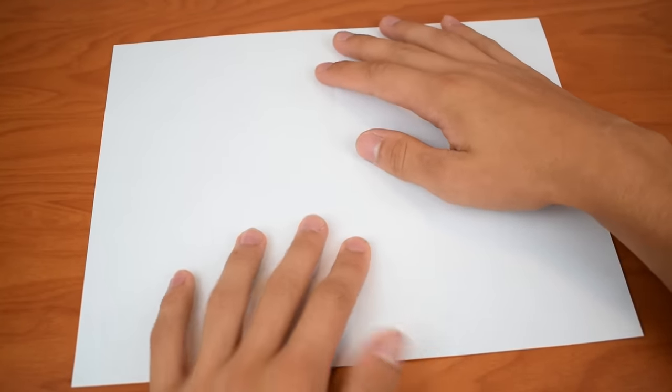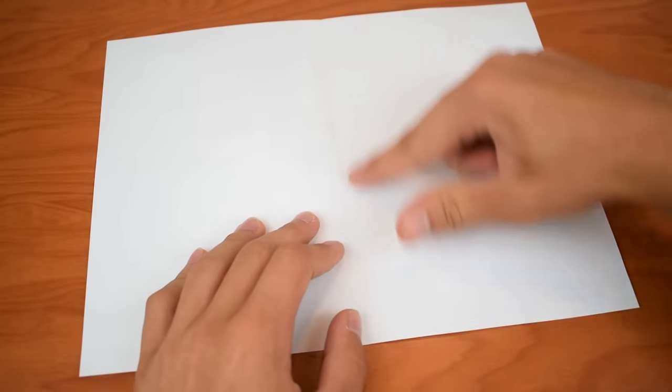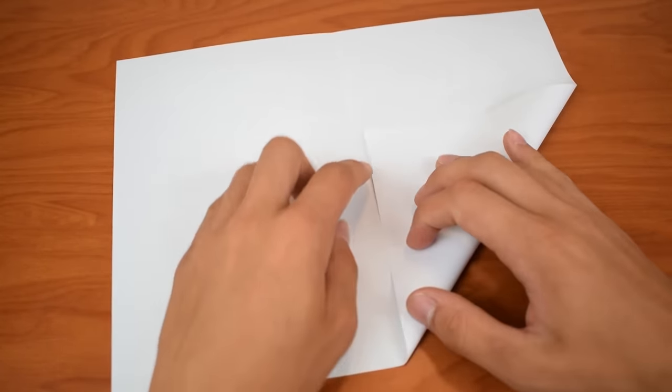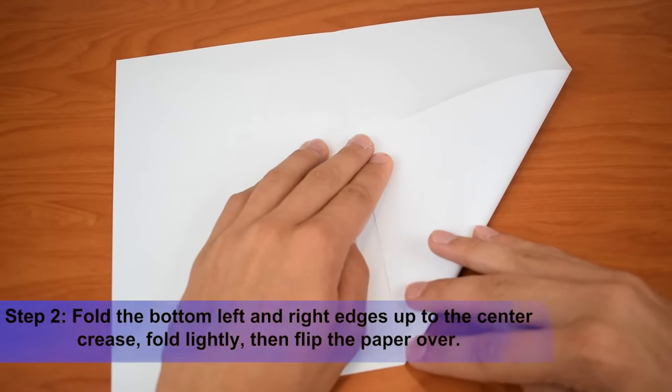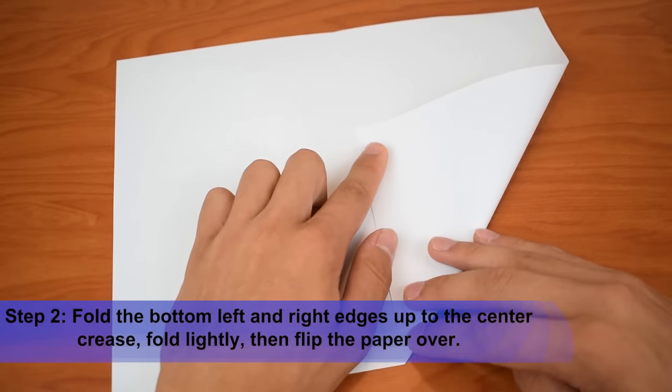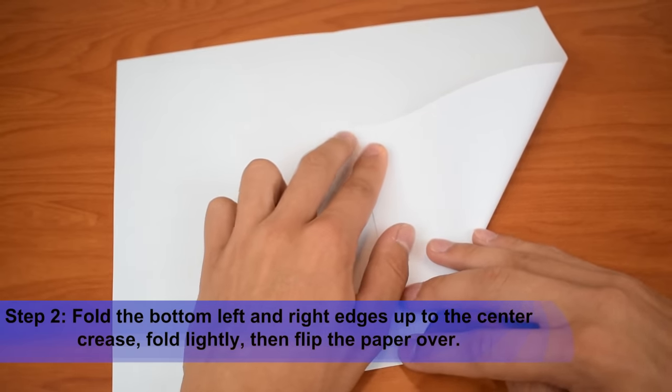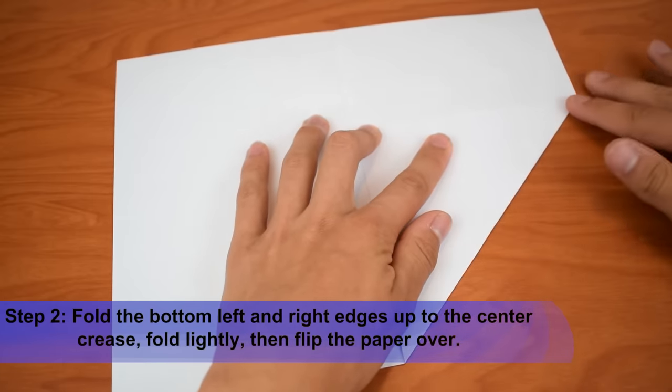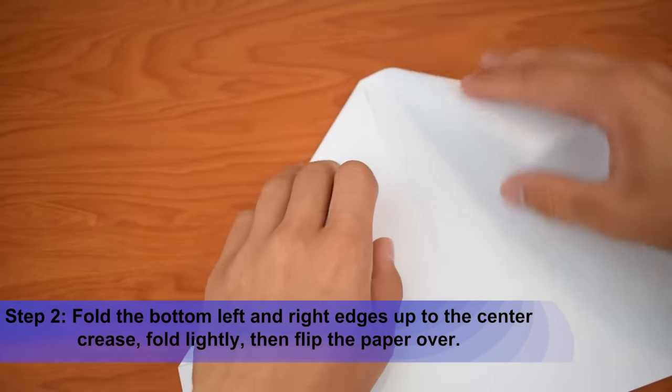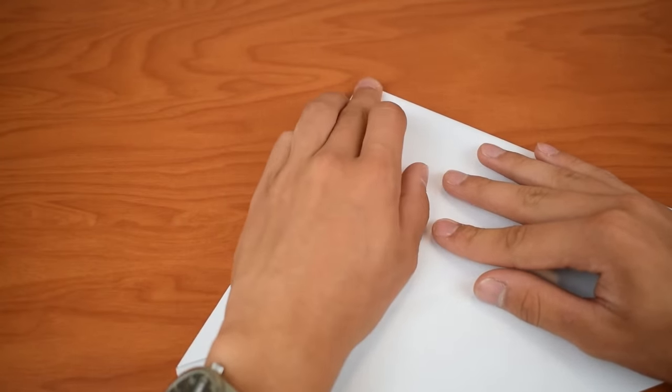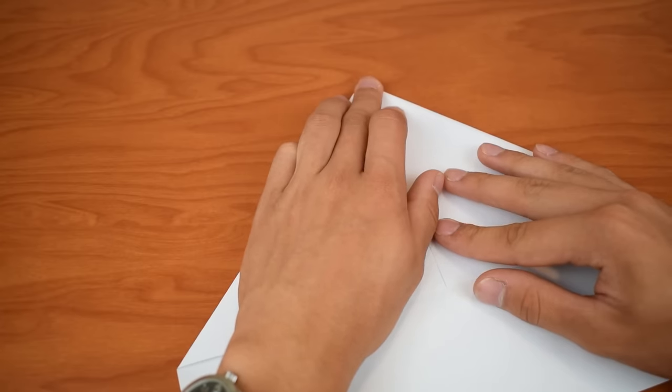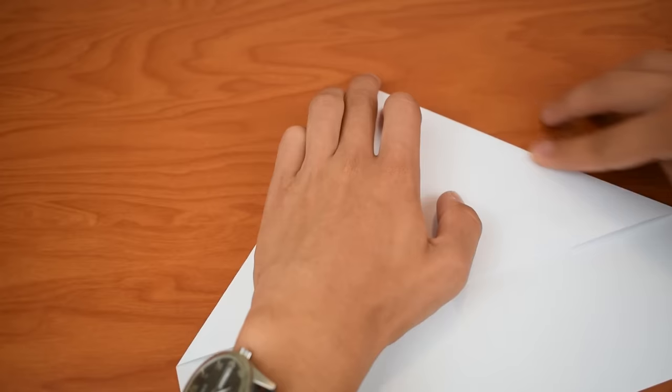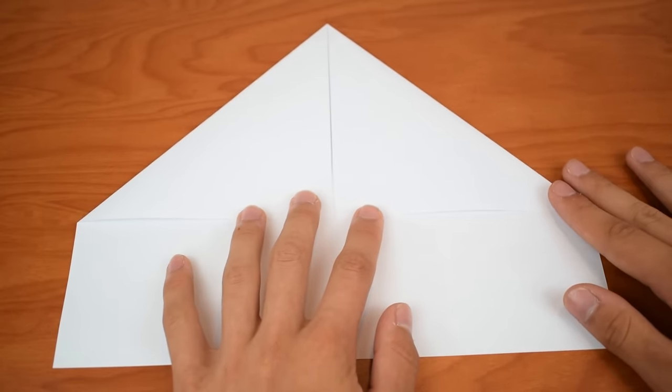Next what we're going to do is we're going to fold this edge up to the center crease, and this edge up to the center crease, kind of like a paper airplane. Now this one doesn't need to be very strongly creased, but it should also be very accurate. So make sure you're lining things up really well, make sure everything is really perfect, and then fold. I'm not going to fold super firm though, I'm just kind of lightly pressing it down. And do the same thing on the other side.